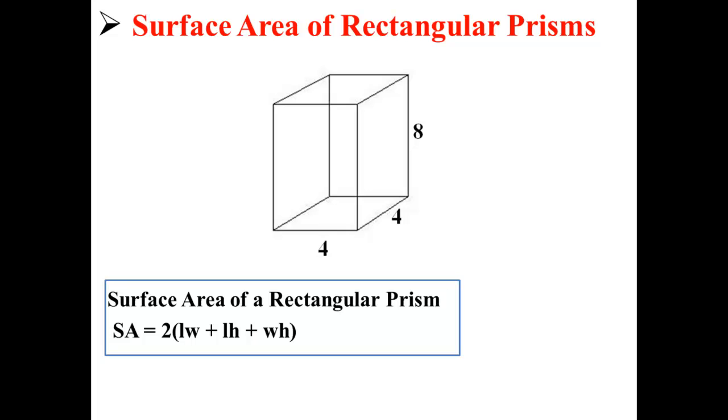Luckily we have an equation to find the surface area of a rectangular prism. It is surface area equals 2 times length times width plus length times height plus width times height.